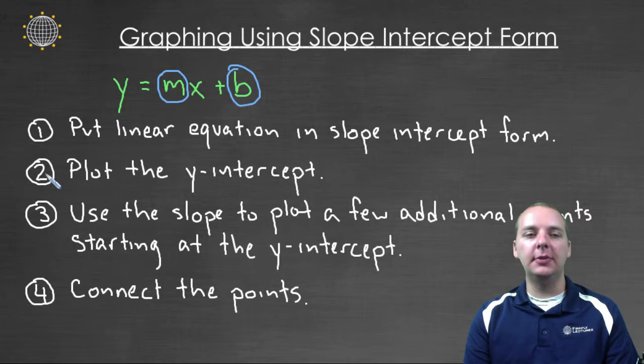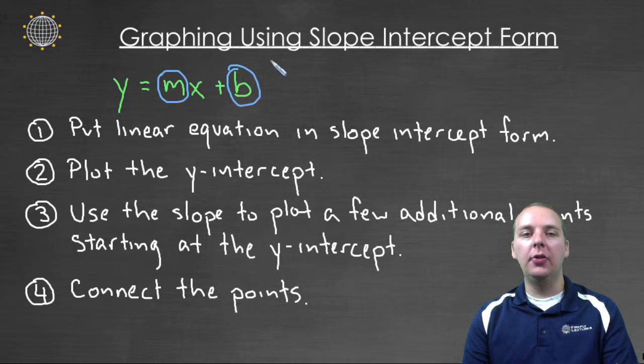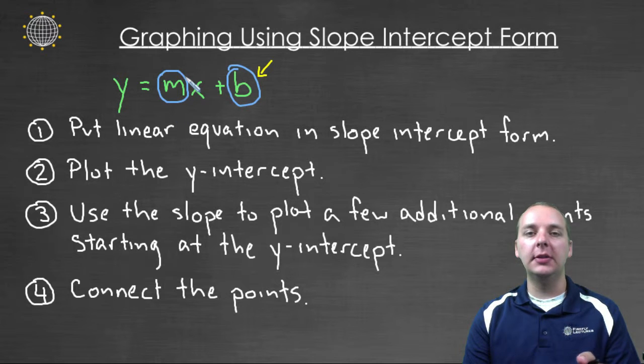The real meat of the steps are steps two, three, and four. So once it's in slope intercept form, number two is we're going to start by plotting the y intercept. The slope doesn't do anything for us before we get the y intercept plotted. So plot the y intercept first.